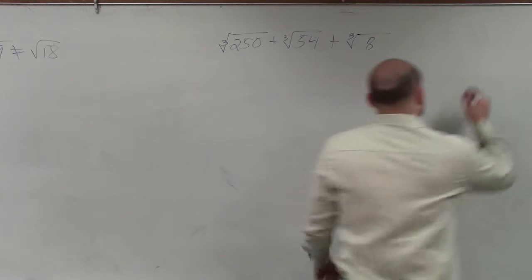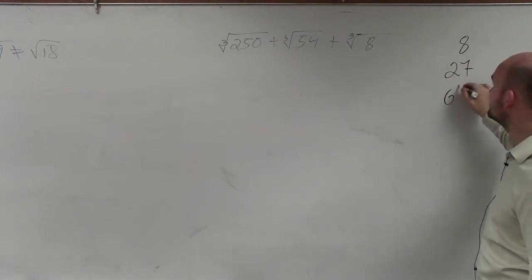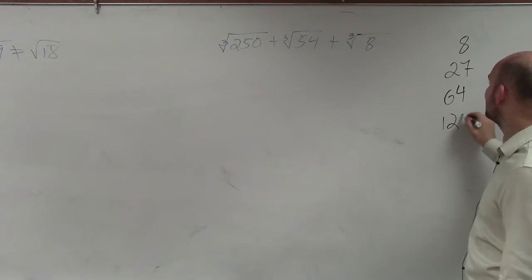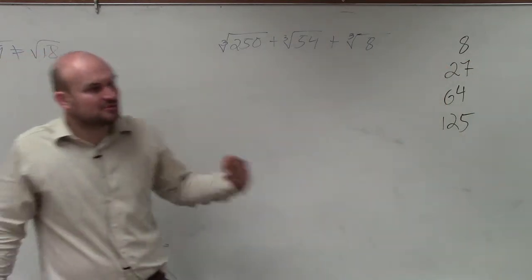So the way that I like to always do it is think about the cubed numbers: 2 times 2 times 2 is 8, 3 times 3 times 3 is 27, 4 times 4 times 4 is 64, and 5 times 5 times 5 is 125. Those are the most common cube numbers you guys will be using.